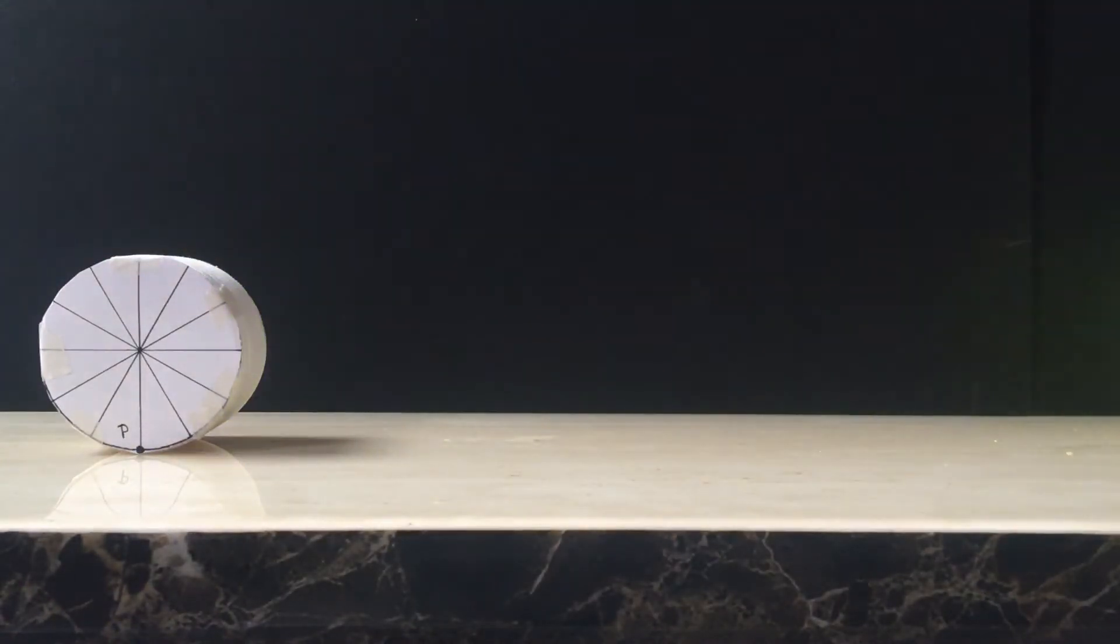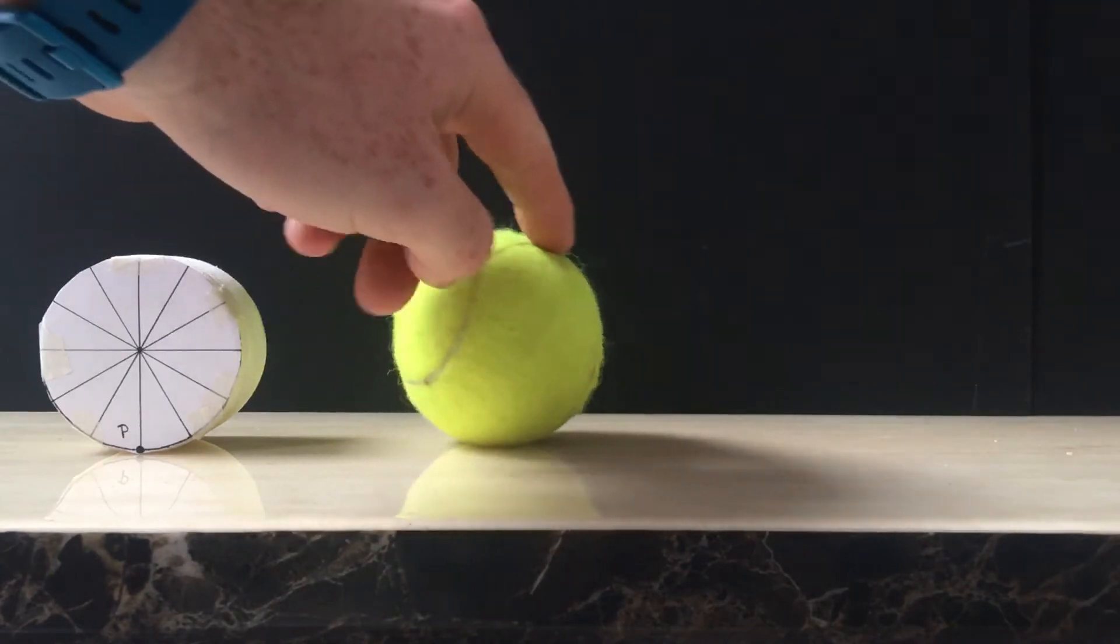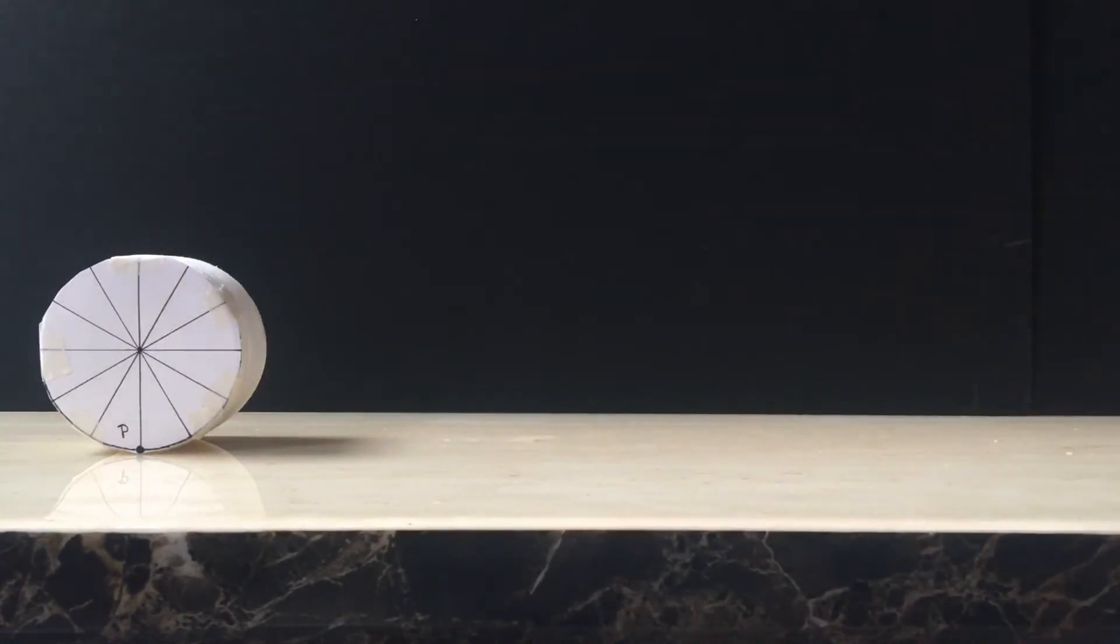So if I just roll that tennis ball, if we picked any fixed point on that and as it rolled, if we followed it, that would give us the locus of that point. So I'm just going to use